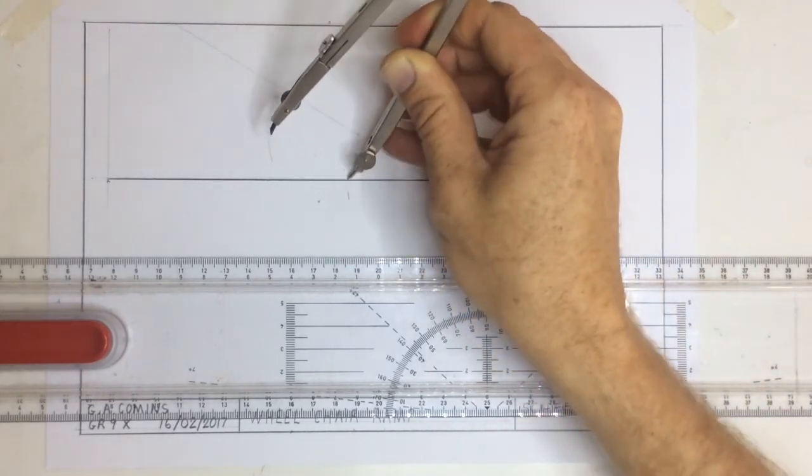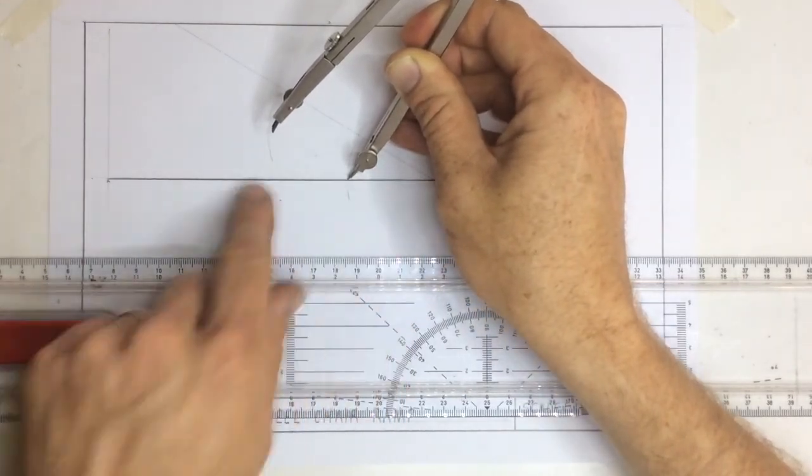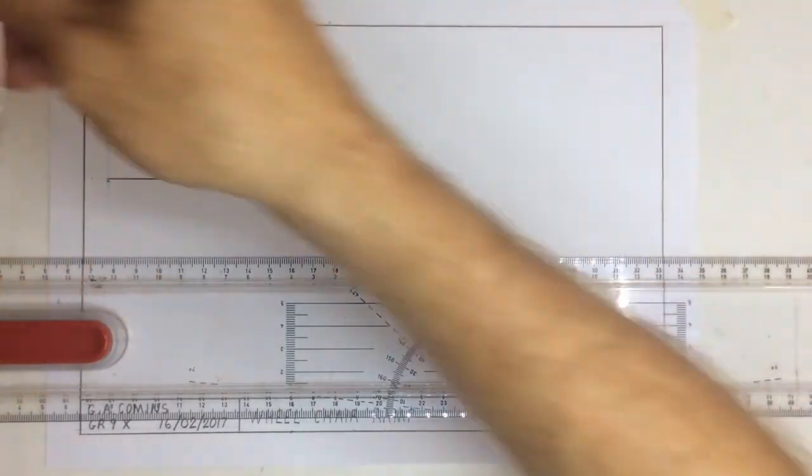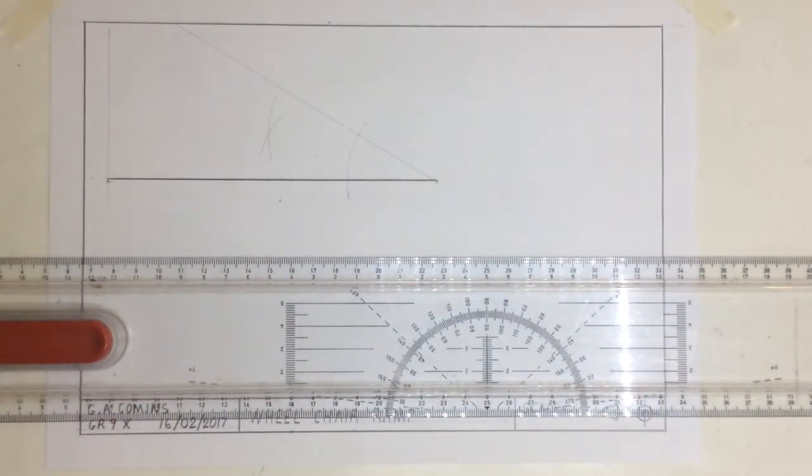Coming down to where the arc cuts the base, I draw another arc. Where those two arcs intersect, I want you to draw a line.